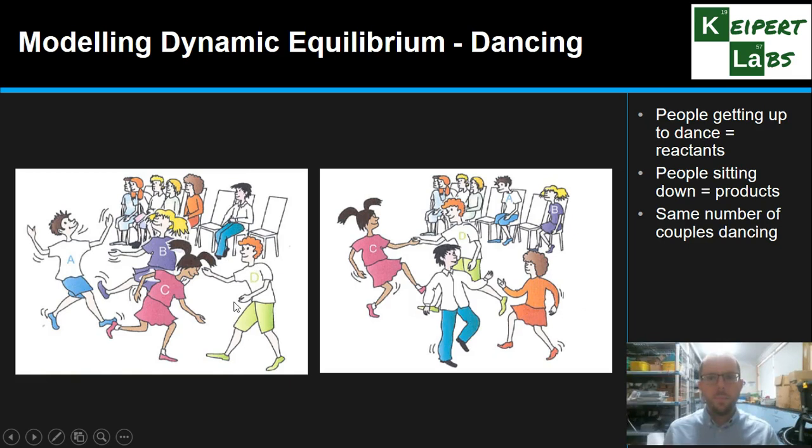So what we're saying is that over time in this system that we have, we always have two couples dancing. And so as to which people though, that can vary over time. So we have the same number of people sitting down and the same number of people dancing, but we will have some people sitting down who stand up. Some people who are dancing will sit down.